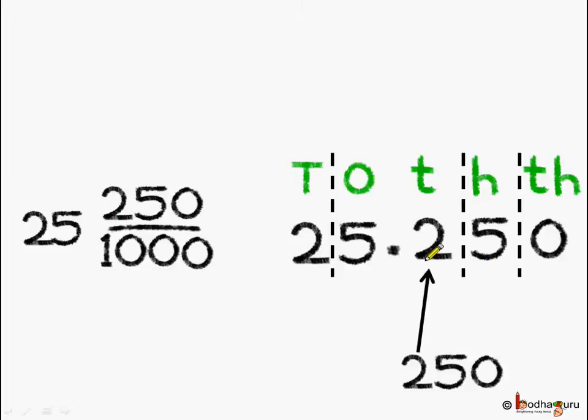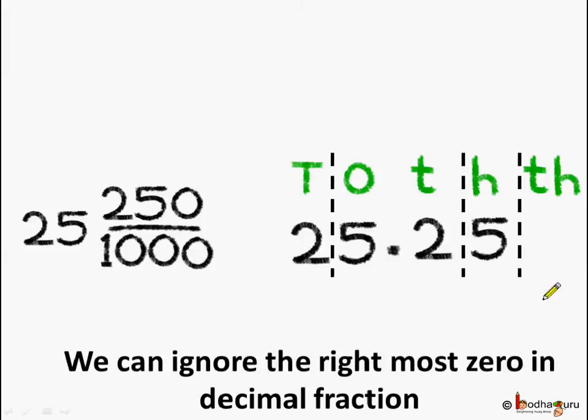2 goes to the tenth place. And as we know, the whole number is 25. So, it will automatically go to the tenths and ones place respectively. So, now you know how to convert a mixed fraction to a decimal number. 25 and 250 by 1000 becomes 25.25. You may ask why there is no zero at the thousands place. Well, the reasoning is the same. We can ignore the rightmost zero in the decimal fraction. So, it becomes 25.25.